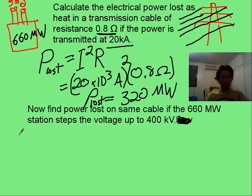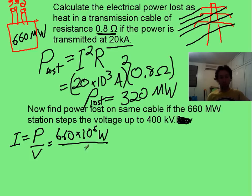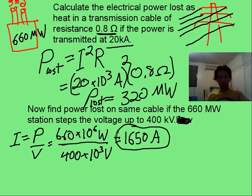Now pause it and see if you can find the new power loss. Hopefully you saw that the new current, which is P over V, is going to be your 660 megawatts divided by your 400 kilovolts, and that gives you a much lower, although it's totally big, amps of 1650. You still don't want that going through your body.